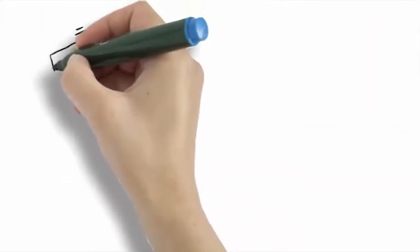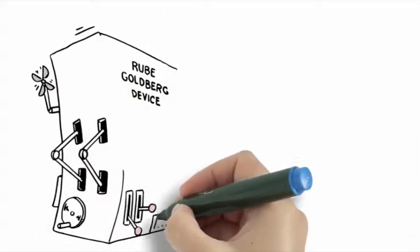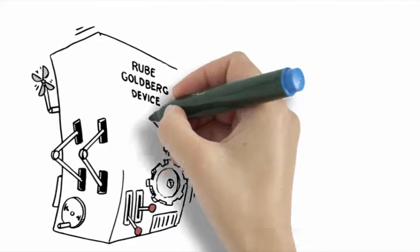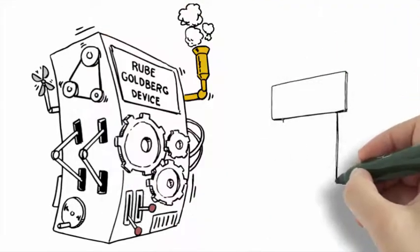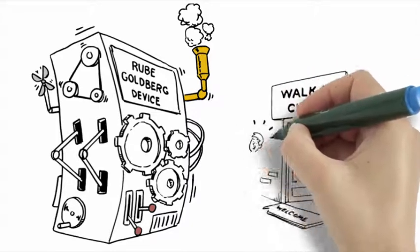But we created an enormously expensive Rube Goldberg device to prevent largely unpreventable single events among the healthy majority. So what we need now are easily accessible, low-cost solutions for simple problems, like walk-in clinics.